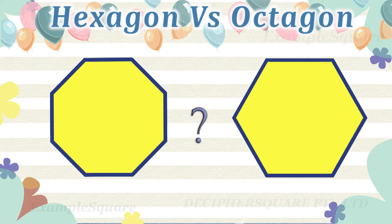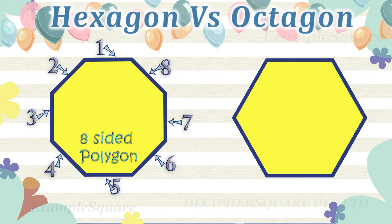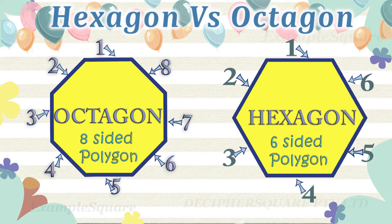Which one of these is a hexagon and which one of these is an octagon? An octagon is a polygon with eight sides and eight corners. This is an octagon. A hexagon is a polygon with six sides and six corners. This is a hexagon.